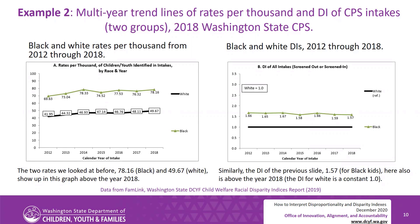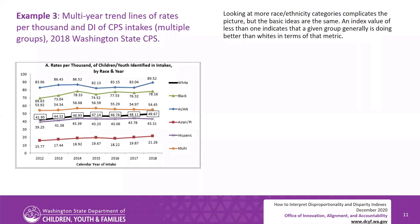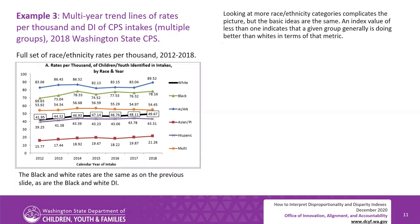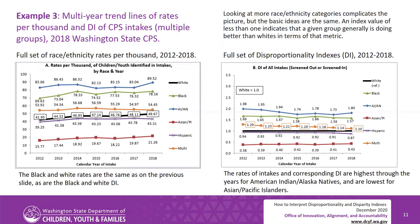Looking at more race and ethnicity categories complicates the picture, but the basic ideas are the same. An index value of less than one indicates that a given group generally is doing better than whites in terms of that metric. Example 3: multi-year trend lines of rates per thousand and DI of CPS intakes for multiple groups, 2018 Washington state CPS. The full set of race and ethnicity rates per thousand and disproportionality indices from 2012 through 2018 shows that rates of intakes and corresponding DI are highest through the years for American Indian Alaska Natives, and lowest for Asian Pacific Islanders.